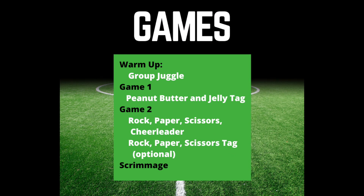Now let's take a look at the games we'll play in order to support this relationship skill building. First, we'll start with a name game called Group Juggle. Then we'll work on Peanut Butter and Jelly Tag. And finally, you'll look at Rock Paper Scissors Cheerleader, and if there's time, Rock Paper Scissors Tag. Then you'll finish with a group scrimmage.